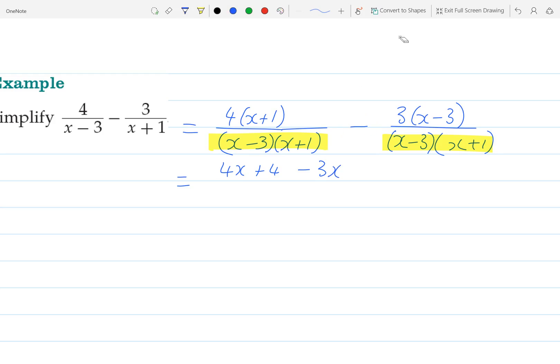But because I'm subtracting negative 9, I'm going to get plus 9. And that's all over (x-3)(x+1). I'm not going to bother expanding the brackets at this stage unless I have a good reason to.